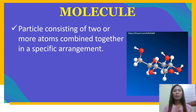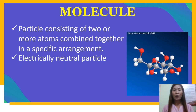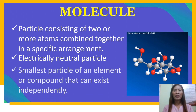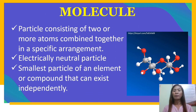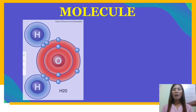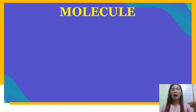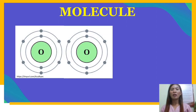A molecule is a particle consisting of two or more atoms combined together in a specific arrangement. It is an electrically neutral particle and is the smallest particle of an element or compound that can exist independently. For example, a molecule of water consists of an oxygen atom combined with two hydrogen atoms. Atoms of the same element can also combine to form a molecule — for example, oxygen in the air consists of oxygen molecules made up of two oxygen atoms.